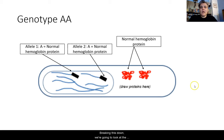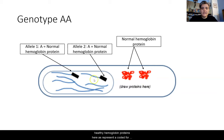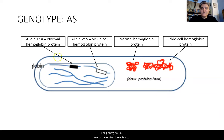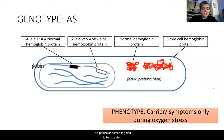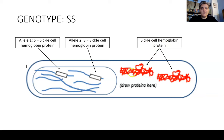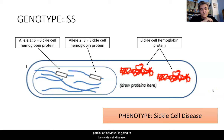Breaking this down: for genotype AA, there are two normal healthy hemoglobin proteins coded by allele one and allele two — the phenotype is normal with no symptoms. For genotype AS, there is a code for a normal healthy protein and a sickle cell protein, both present in the cytoplasm — this person is a carrier, with symptoms only during oxygen stress. For genotype SS, both alleles code for sickle cell hemoglobin protein, which is present in the cytoplasm — the phenotype for this individual is sickle cell disease.